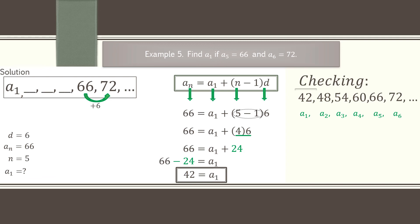Counting confirms: 42 is the 1st term, and working forward, 66 is the 5th term and 72 is the 6th term of the sequence. So our first term, a sub 1, is indeed 42.